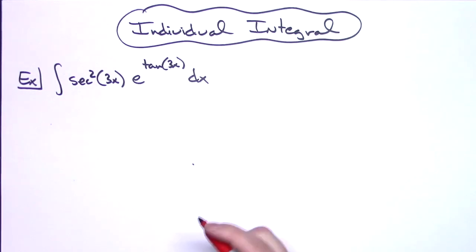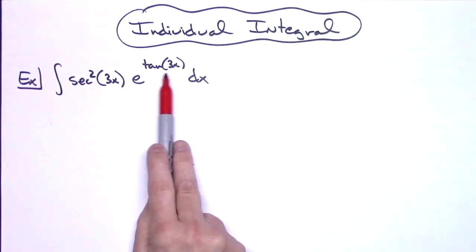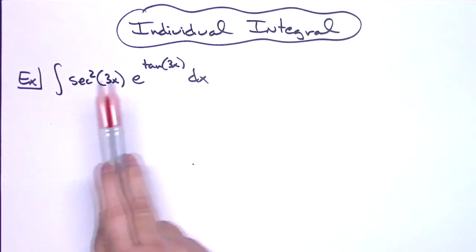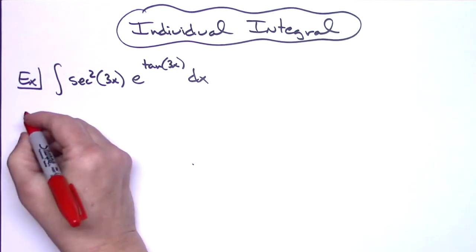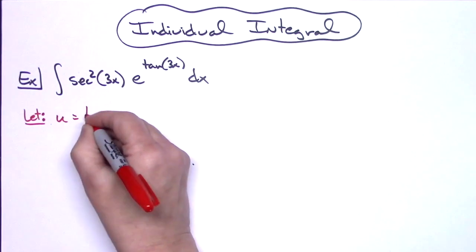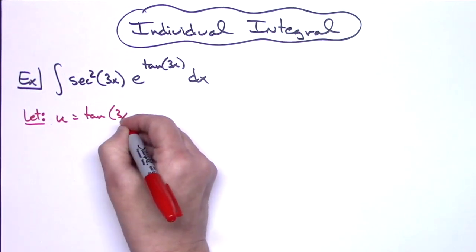First thing we have to do is make a decision on what our u is going to be. If we take a look at this tangent of 3x, the derivative there is going to be a secant squared, so things are going to cross out real nice. I'm going to let my u be the tangent of 3x.